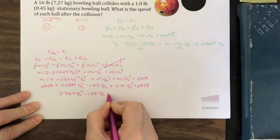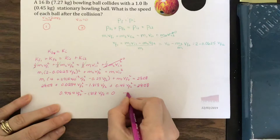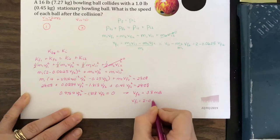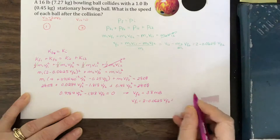So now we can solve for vF2. That's going to give us 3.8 meters per second. And vF1 is 2 minus 0.0625 vF2. That's going to give us 1.8 meters per second.